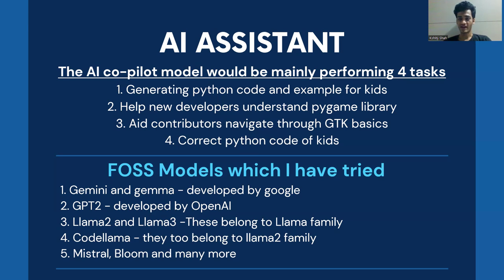For implementing this AI assistant, I have tried many models which are open source. Some of them have been listed here. Gemini and Gamma have been developed by Google and these are quite good and lightweight models. The GPT-2 model had been tried by me a long back. However, the accuracy was not appropriate. Hence, I have discarded them from my list. Llama-2 and Llama-3 models being the core models of Llama families have excellently high accuracy and the code they are generating is of very good quality and easy for kids to understand.